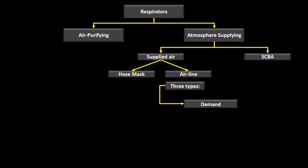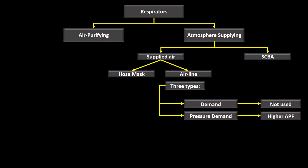There are three types of airline respirators. Demand is not used. Pressure demand and continuous flow both provide positive pressure, blowing air into the mask. Demand requires the user to inhale to generate negative pressure, risking loss of seal. Pressure demand has a higher assigned protective factor and is more efficient than continuous flow.